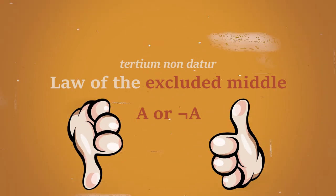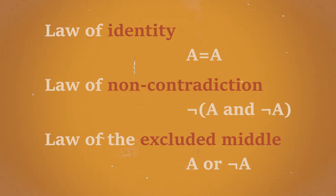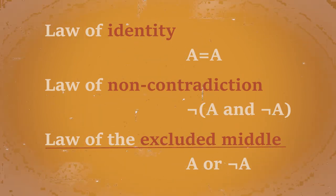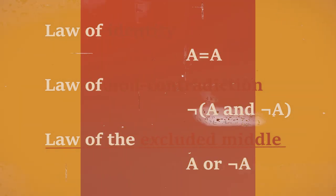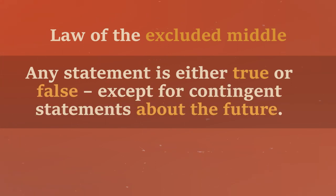Pretty simple and straightforward so far, although that's not really the whole version of the last principle on this list. Aristotle actually complicated things a bit and said that any statement is either true or false, except for contingent statements about the future.